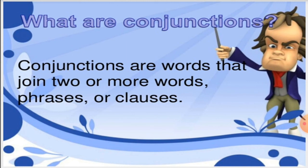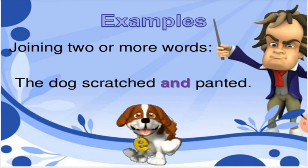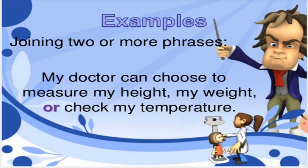Conjunctions are the joining words which join two or more words, phrases, or sometimes clauses too. Let us see the examples. Joining two or more words: the dog scratched and panted. We see here the conjunction AND is used to join two words, that is scratched and panted.